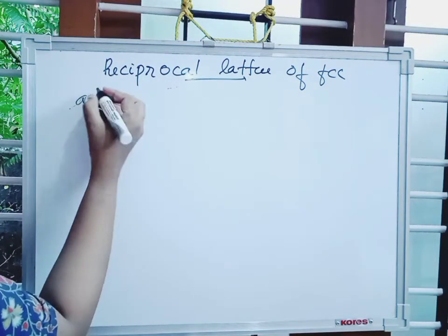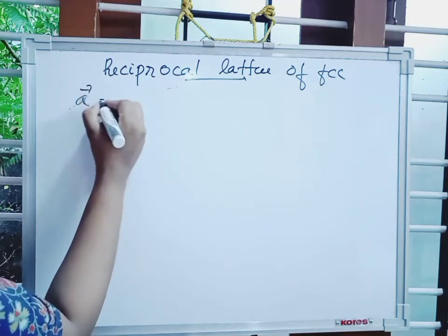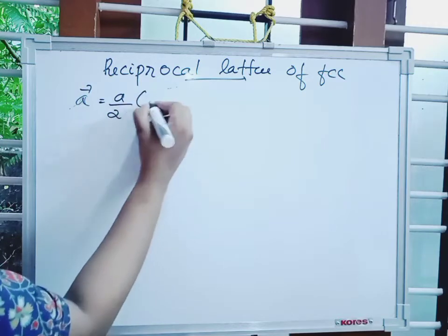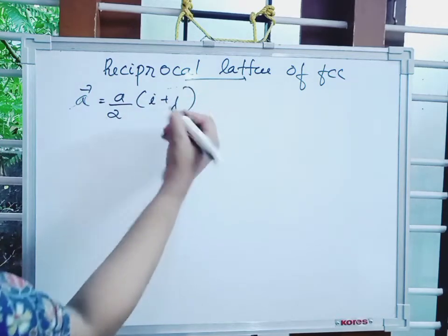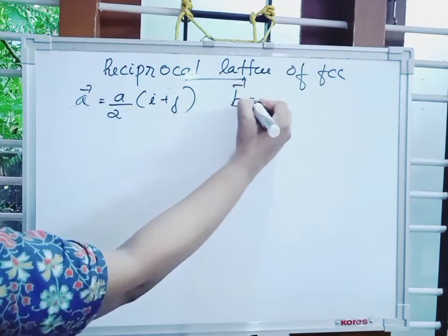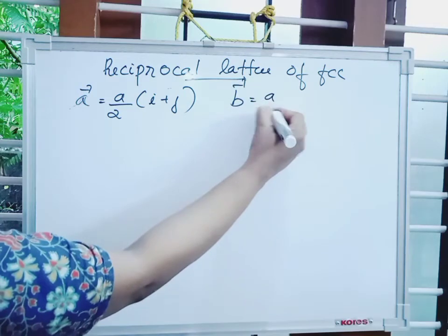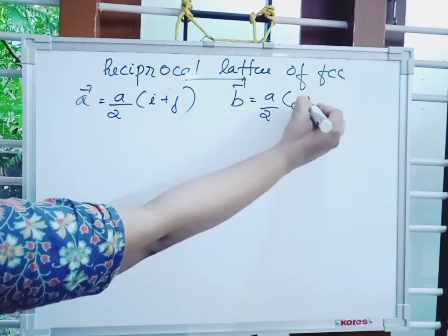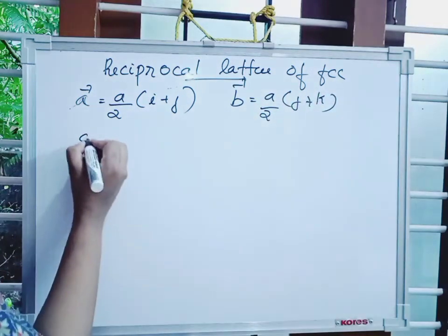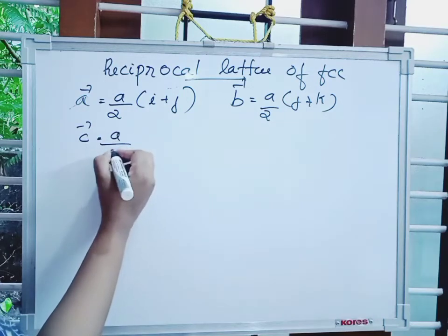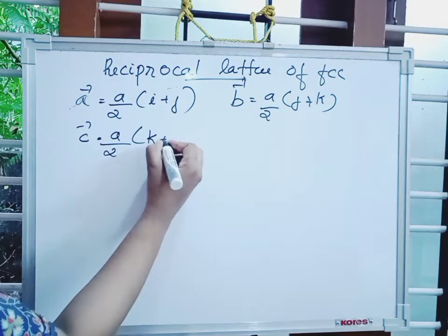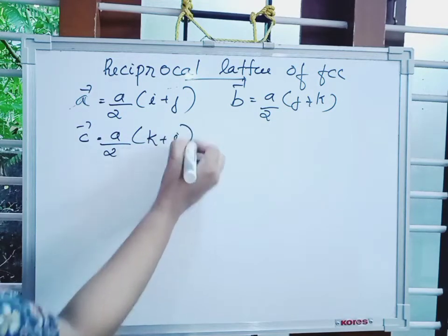The primitive translation vectors for FCC are: a is equal to (a/2)(i + j), b is equal to (a/2)(j + k), and c is equal to (a/2)(k + i).